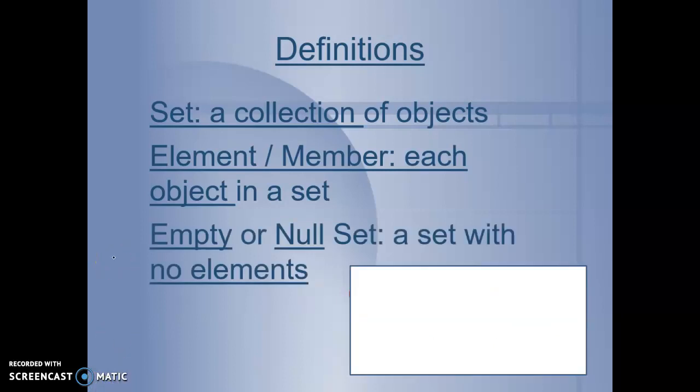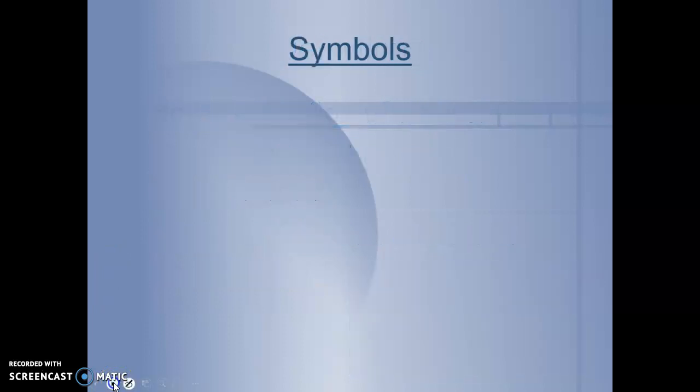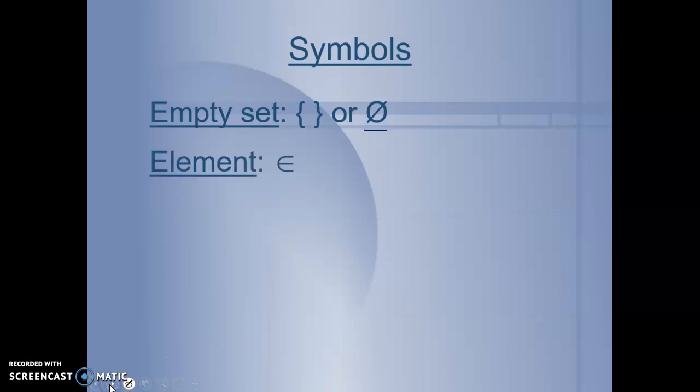An empty, or null set is a set with no elements in it. You can see that all of our members, or elements, have disappeared. We do have some symbols in math to represent these sets. An empty set is represented by empty brackets, or this zero with a line through it. That means null set, or empty set. We use this E-looking symbol to represent an element. And an E with a line through it means not an element.